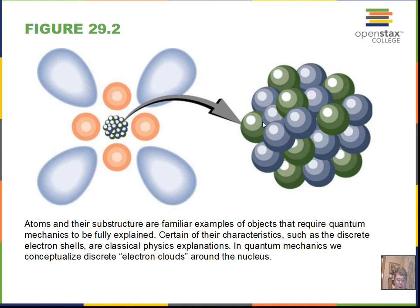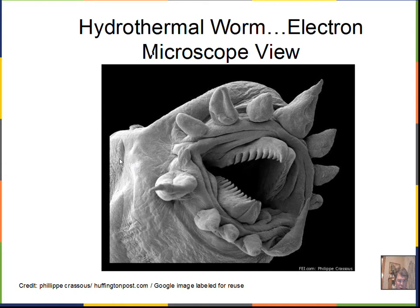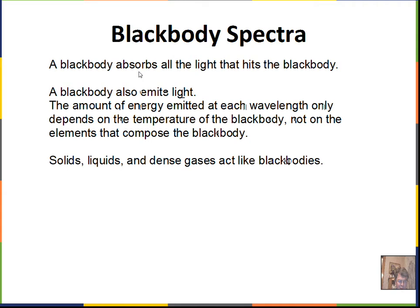Quantum mechanics gained the ability to better explain the energies found in atoms and the probability of locating an electron in an atom, which we'll cover in a future session. Here's a fun photograph — these creatures live near hydrothermal vents deep in the ocean, shown in a much-magnified view using an electron microscope, which is built on the principle that the electron acts as a wave.